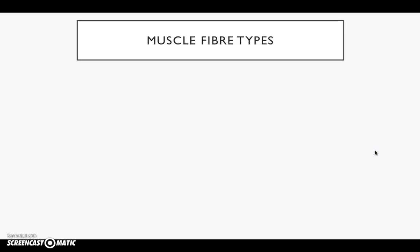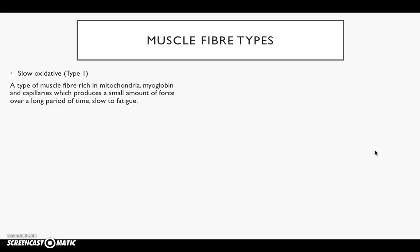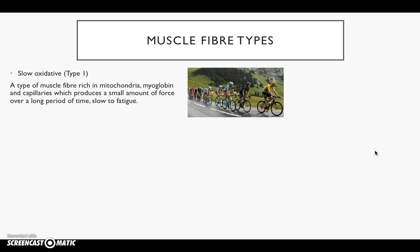On to the actual muscle fibre types. First, slow oxidative, also known as type 1. This is a muscle fibre rich in mitochondria, myoglobin, and capillaries, which produces a small amount of force over a long period of time and is slow to fatigue. Athletes that would use type 1 muscle fibres include marathon runners, long distance cyclists such as Tour de France athletes, and football players.